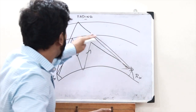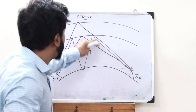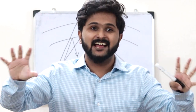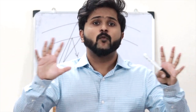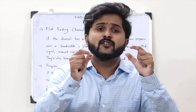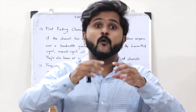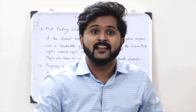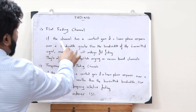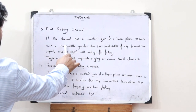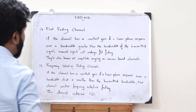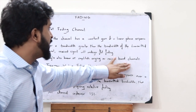A communication channel which undergoes fading is referred to as a fading channel. There are different types of fading channels. The first is a flat fading channel. If a channel has a constant gain and a linear phase response over a bandwidth greater than the bandwidth of the transmitted signal, then the received signal will undergo flat fading. These are also known as amplitude varying or narrow band channels.